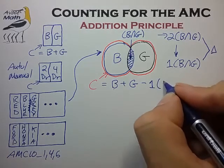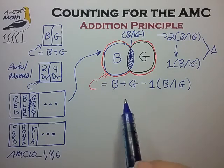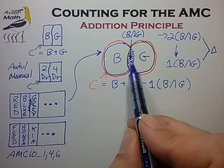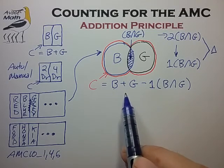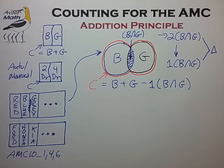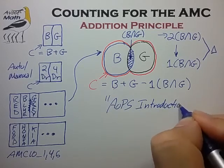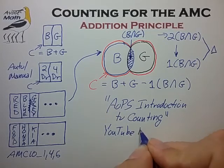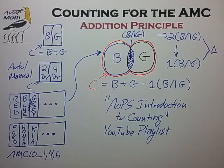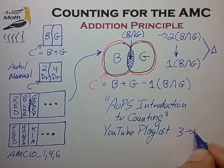The correction is to subtract one times the intersected region of blue and gray. This is a very powerful principle: recognizing that a formula is double counting some portion of our set, and then finding a correction factor. This is one of the most important counting principles, and it is further explored in the YouTube playlist 'AoPS Introduction to Counting.' The videos covering Venn diagrams and counting overlapping subsets are videos numbers three through five.